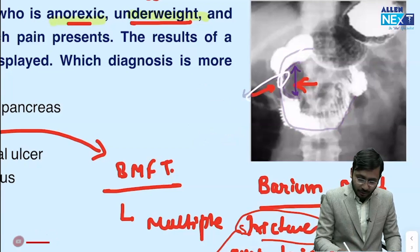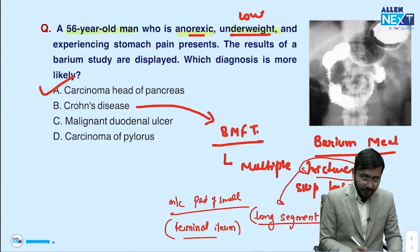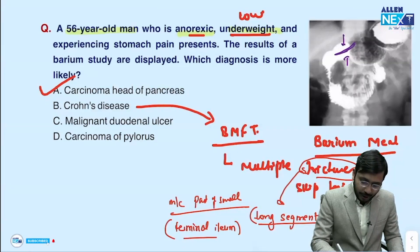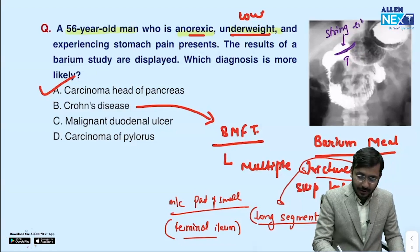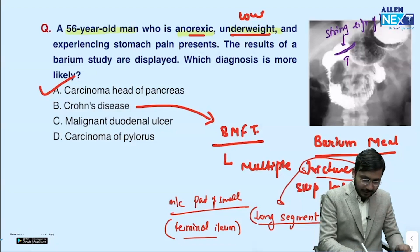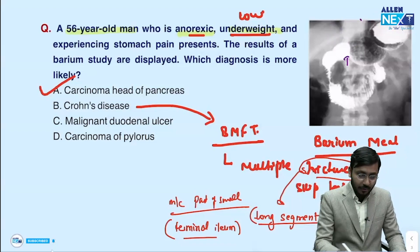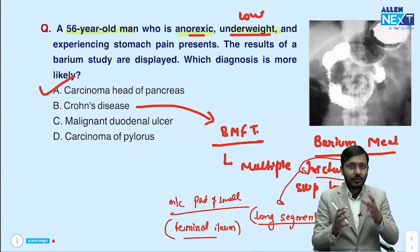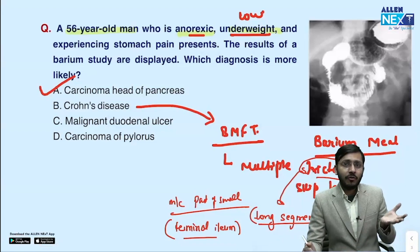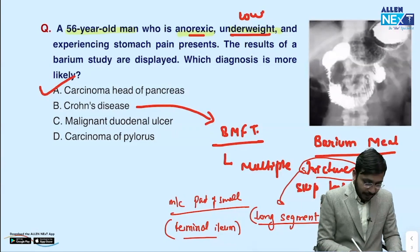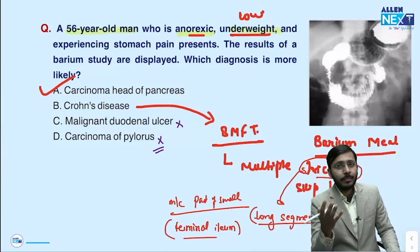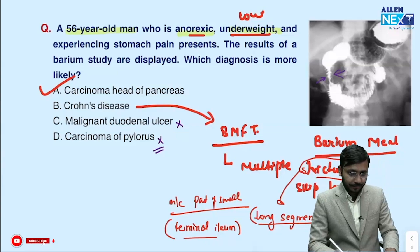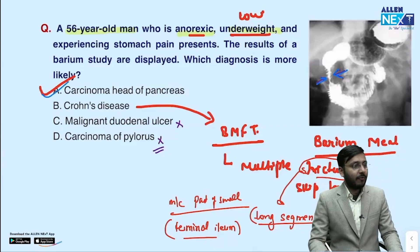The string sign of contour is not seen in the duodenum. String sign of contour is seen in the pylorus in pyloric stenosis (IHPS), while string sign of contour in the terminal ileum is seen in cases of TB. Since there is no narrowing in the region of the pylorus, CA pylorus is ruled out. Malignant duodenal ulcer is also ruled out because there is no abnormality in the stomach — the abnormality is in the second part of the duodenum. Hence the answer is carcinoma head of pancreas.